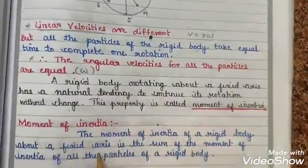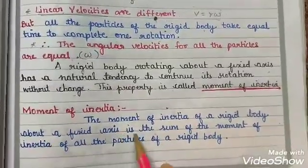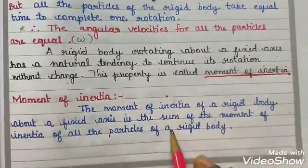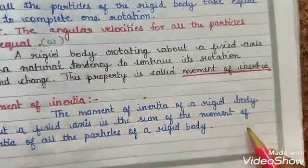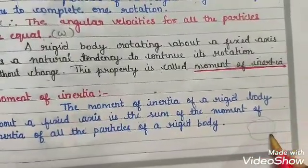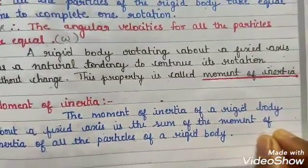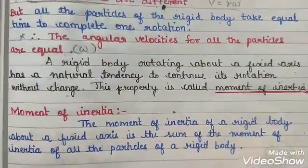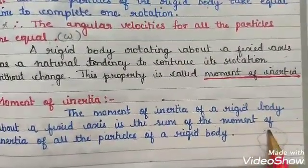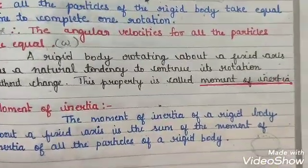The moment of inertia of a rigid body about a fixed axis is the sum of the moment of inertia of all the particles of the rigid body. So for all the particles in the rigid body, we calculate the total moment of inertia as the sum of each particle's individual moment of inertia.